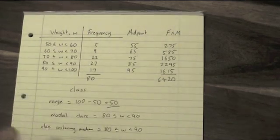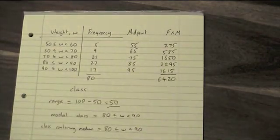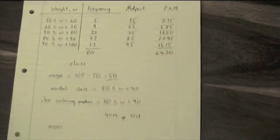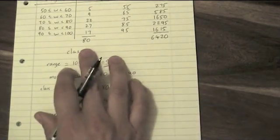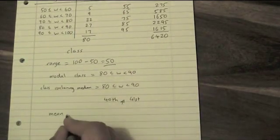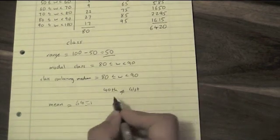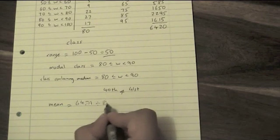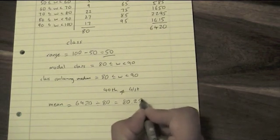That's just like as if I'd added them all up separately, but I've used this multiplication thing to make it quicker. Finally, the mean is the total divided by how many we had. So the mean is 6420 divided by 80, which is equal to 80.25.